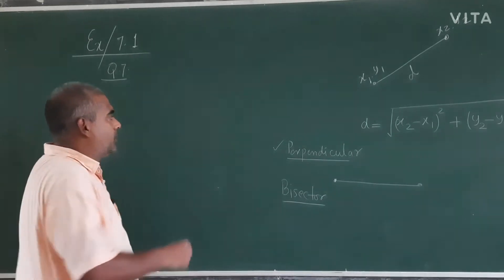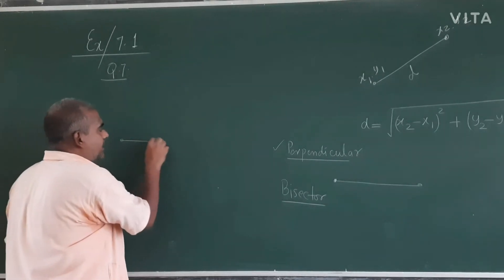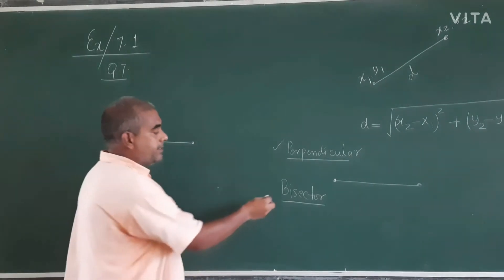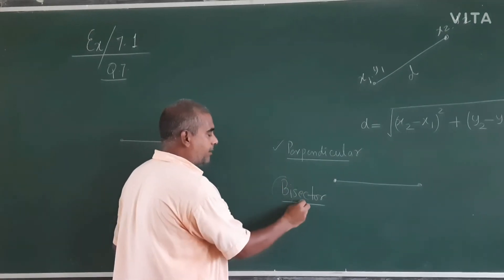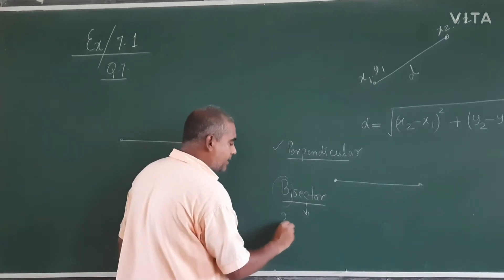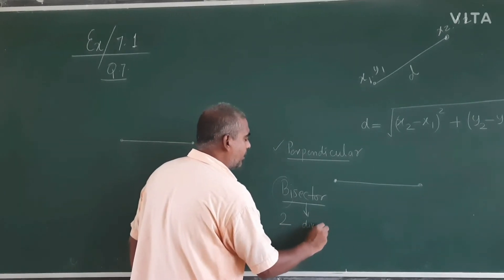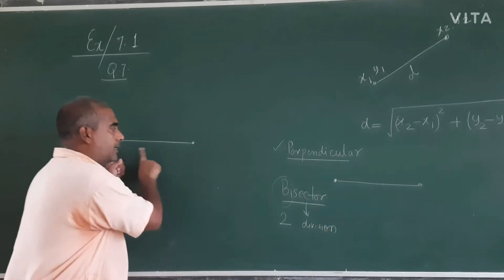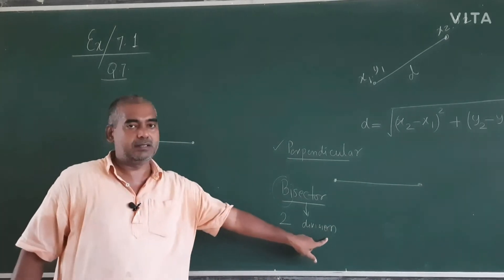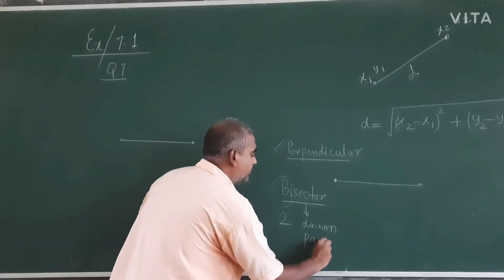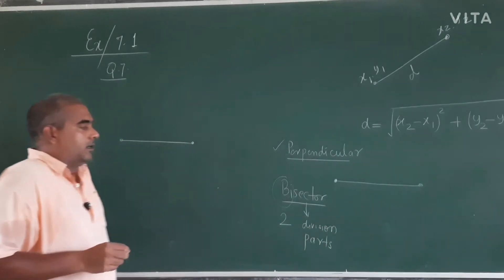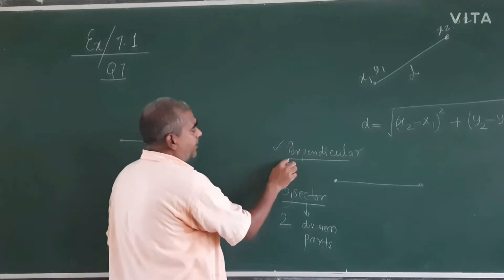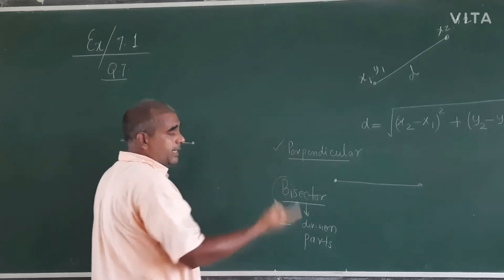So let's revise. If you have any line segment — 'bi' means two and 'sector' means division — so a bisector divides the line segment into two equal parts. And perpendicular means 90 degrees.